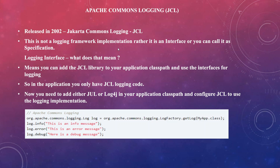Once you add JCL to your project, you use all its APIs with method names like info, error, and debug. You also add either JUL or Log4j as the implementation, and JCL will invoke that implementation. This way, if you want to switch between logging APIs, all you need to do is update the implementation in your classpath — no need to update all the logging statements across every class file.